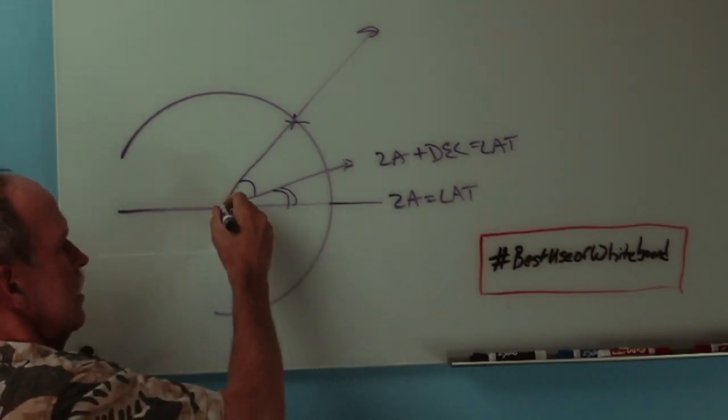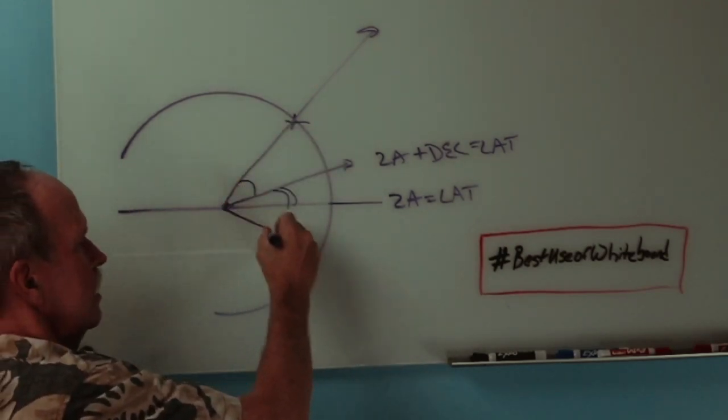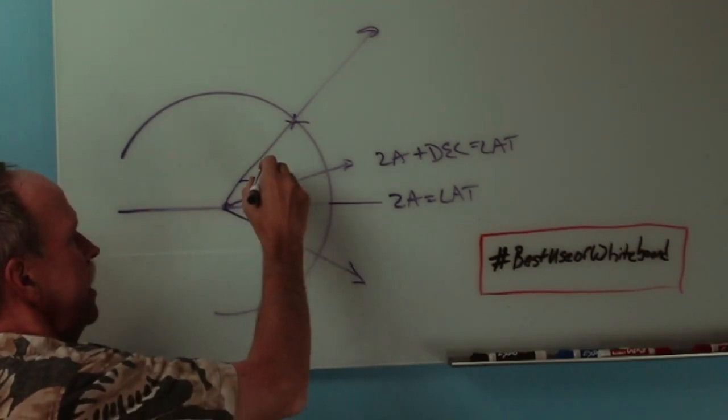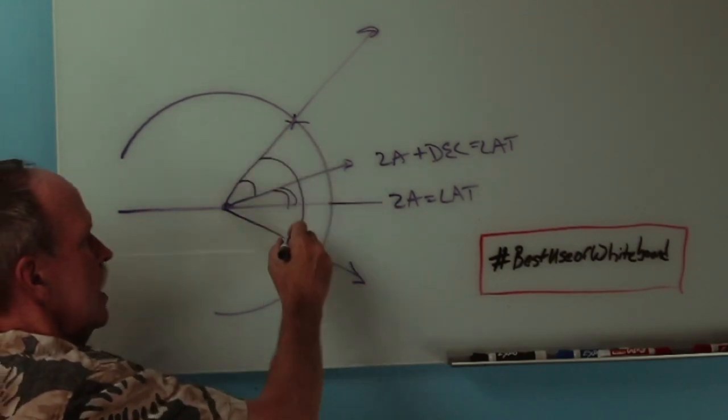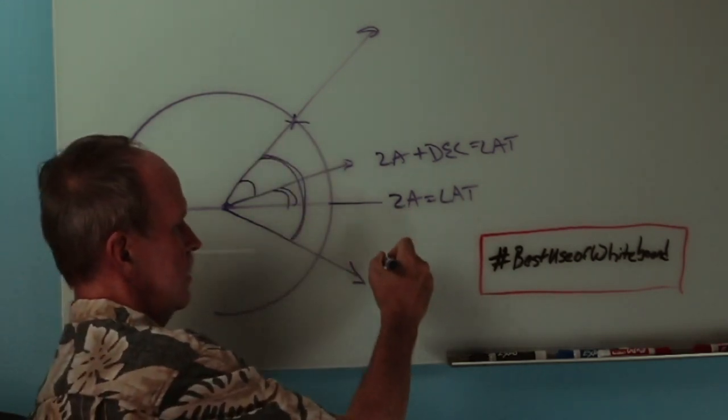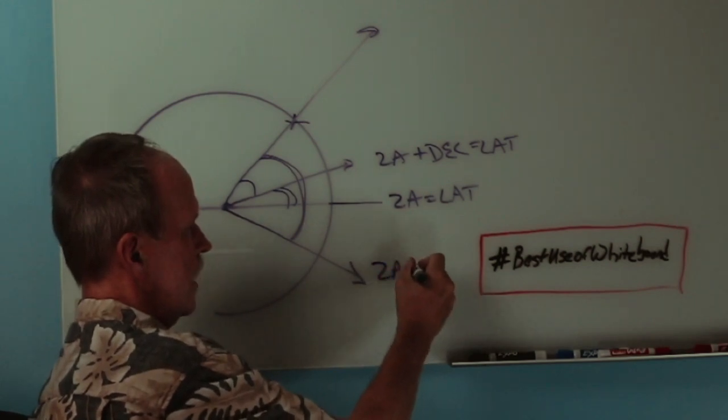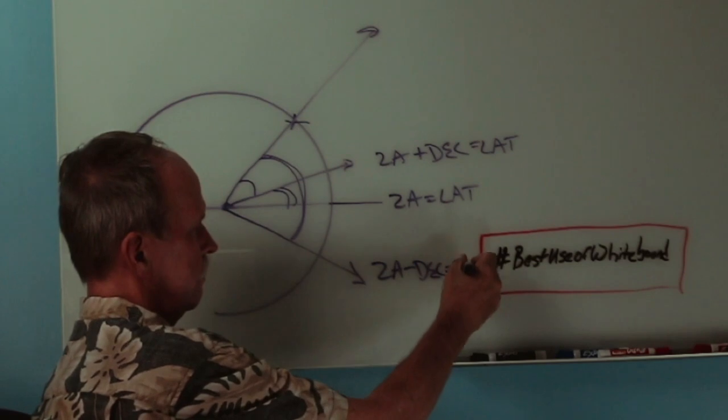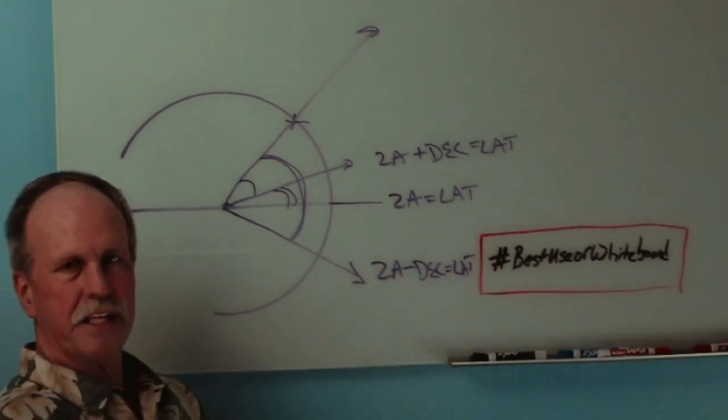It would be zenith angle plus declination equals latitude. If the zenith angle was here and the Sun was down here, we would measure this entire angle with our sextant. So, we have to take zenith angle minus declination equals latitude. Does that make some sense?